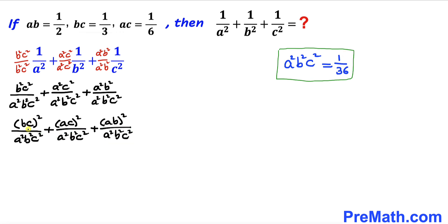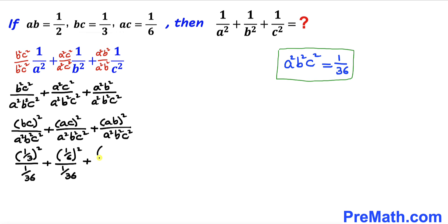Let's fill in the values. The first term becomes (1/3)² divided by 1/36, the second term becomes (1/6)² divided by 1/36, and the third term becomes (1/2)² divided by 1/36.